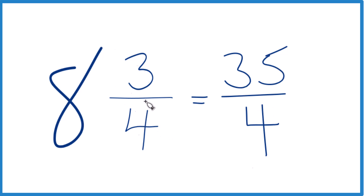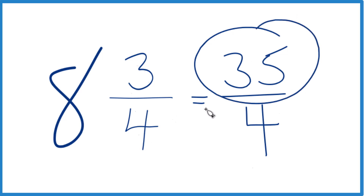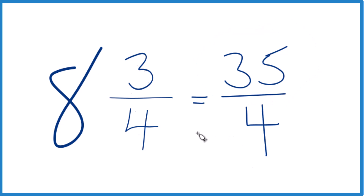Let's do it again. 8 times 4 is 32, and 32 plus 3 gives us the numerator, 35. Then we just bring the denominator across. These are equivalent — 35 fourths equals 8 and 3 fourths. They have the same value; it's just that we're representing it here as an improper fraction.